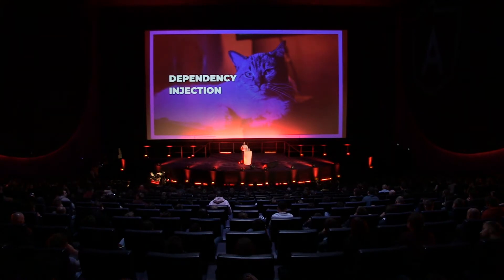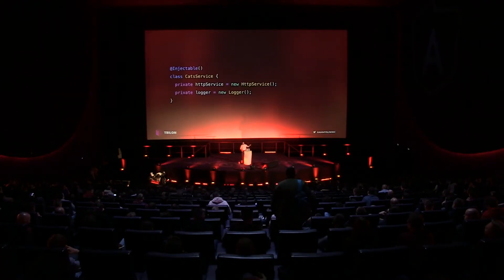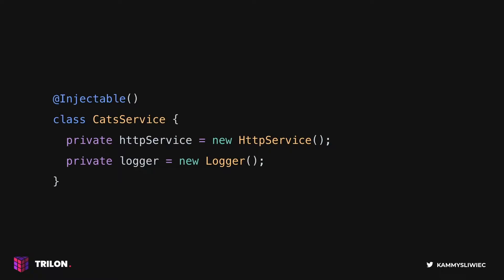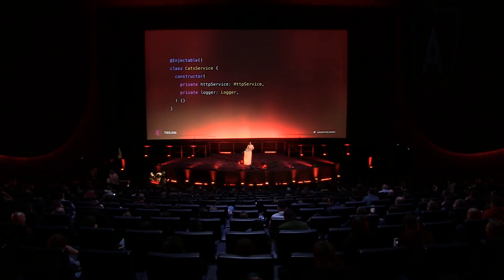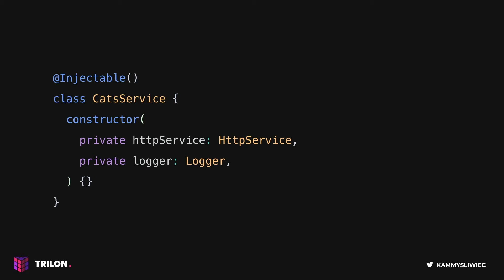Dependency injection is an important application design pattern. It helps us create flexible, scalable, and testable systems. Both Angular and NestJS have their own dependency injection frameworks. Consider this simple example: a regular CatService class that makes use of two dependencies — HTTPService and Logger — both immediately instantiated within the body of the class. We already know this approach is not very maintainable, not really testable, and makes creation of comprehensive software tougher over time.